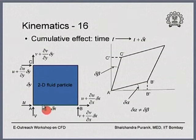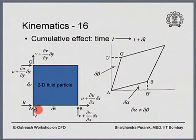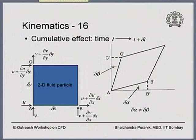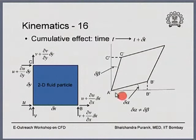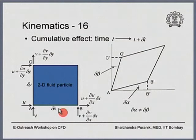That change in the length experienced by AB is what we call delta AB. To find delta AB, you look at A-prime B-double-prime in the figure — that is your changed length. From the changed length, subtract the original length AB (which is delta x), giving you the change in length AB, which yields the linear strain experienced by that segment.